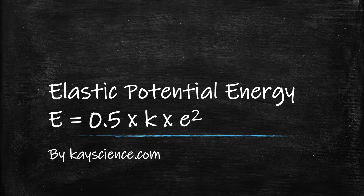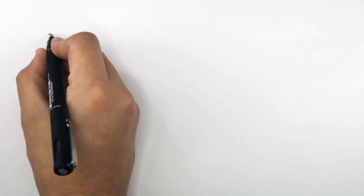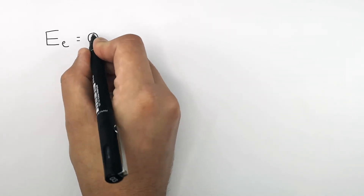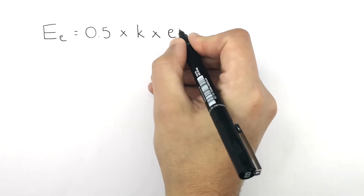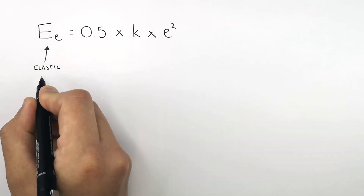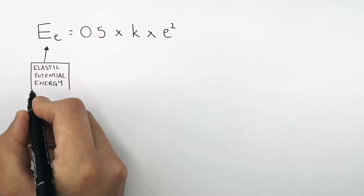Elastic potential energy, by kscience.com. The formula for calculating the elastic potential energy stored in an object is E equals half times k times E squared, where E is the elastic potential energy stored in an object.